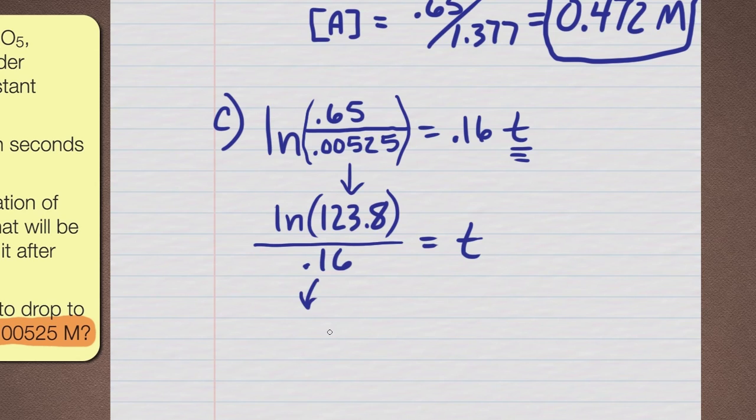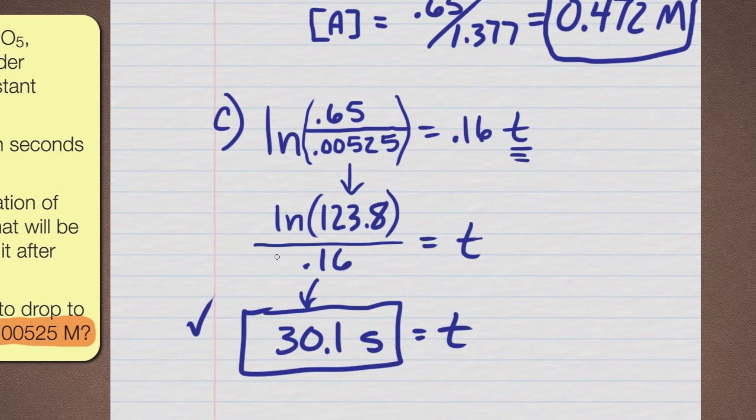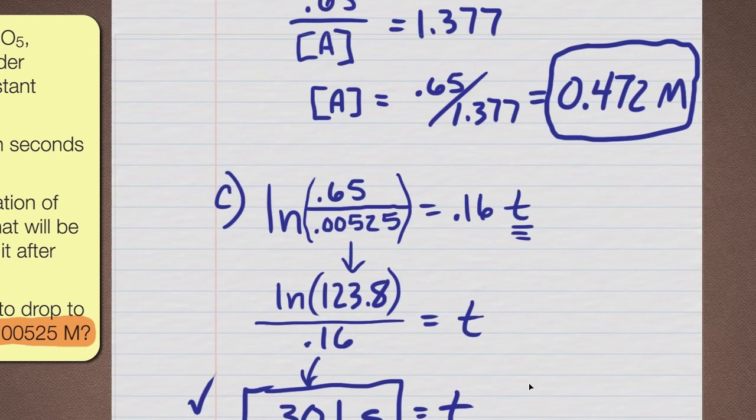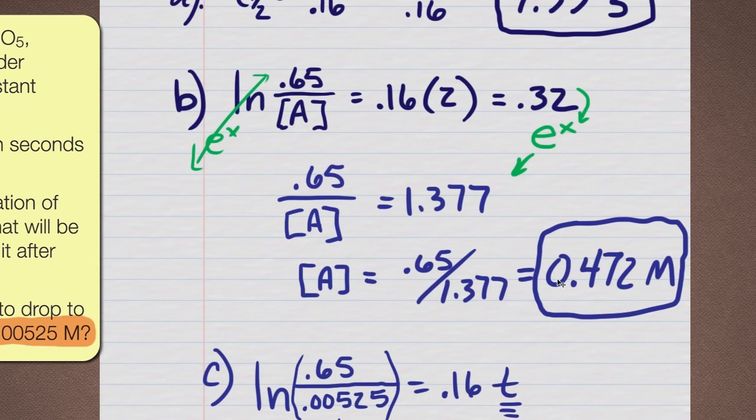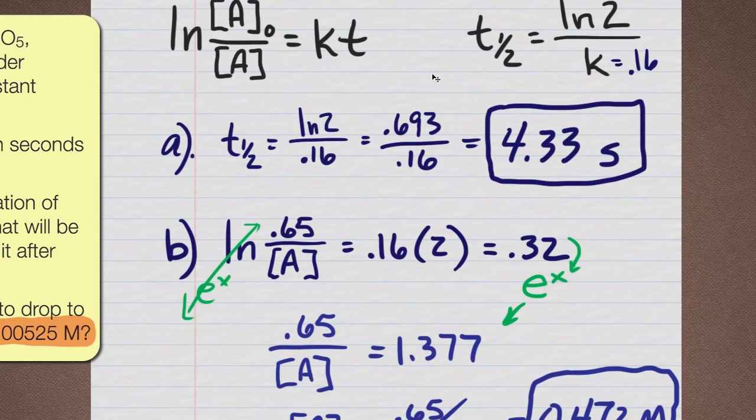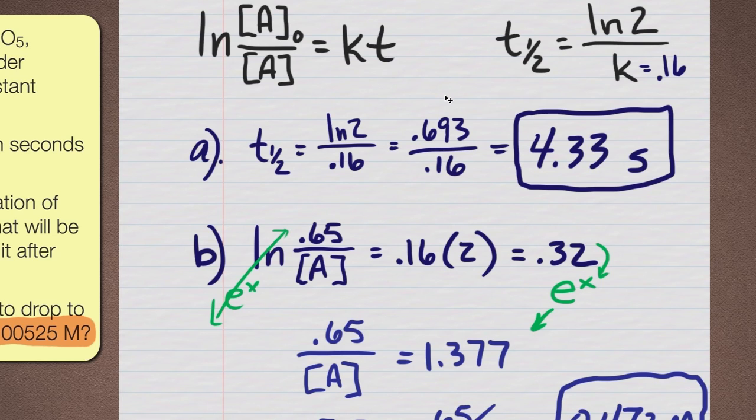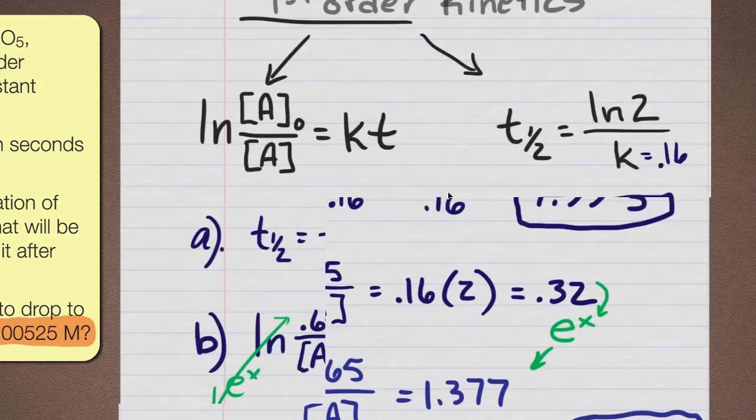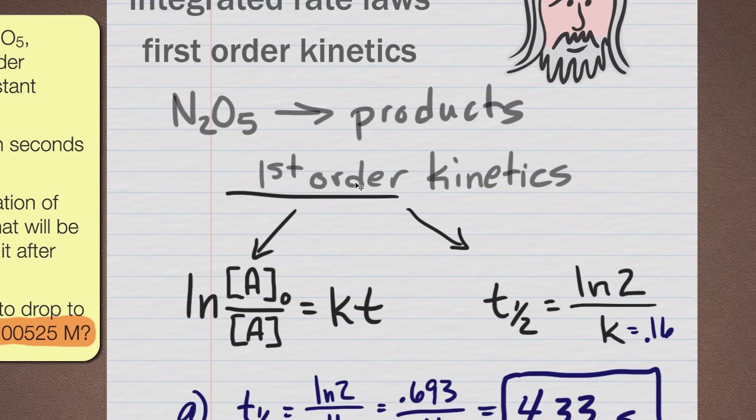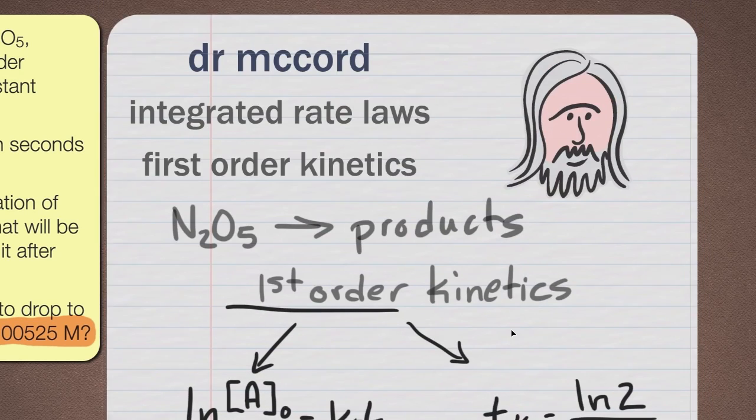When you do that, you will get the value 30.1 seconds. That's our time it takes to fall to that value. So there's our third answer. You can see that we've gotten all of them. The third answer, there's the second answer, and there's the first answer. And so it's not that tough. You just got to keep in mind to always use the right rate law when you're working a first order kinetics problem. And that's exactly what that was.